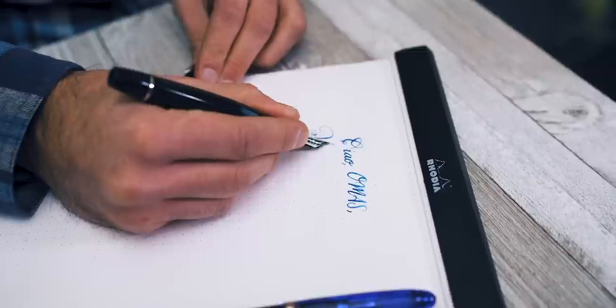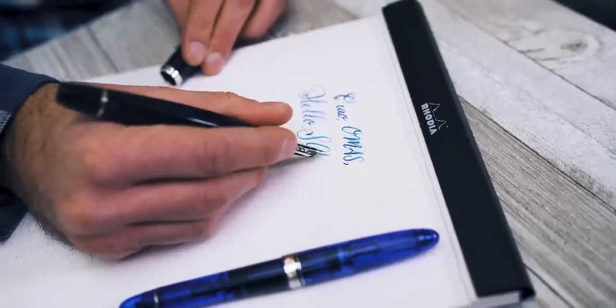The result is a controlled line variation that can swell and contract by applied finger pressure. The difference between stub and flex nibs can be best described by the late Susan Wirth,